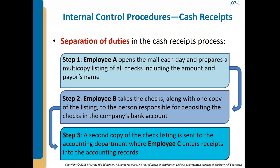An approach to internal control over cash receipts utilizing separation of duties might include: Employee A opens the mail and prepares a multi-copy listing of all checks including the amount and payer's name. Employee B takes the checks and one copy of the listing to the person responsible for depositing them. A second copy is sent to the accounting department where Employee C enters receipts into the accounting records. This ensures accuracy and prevents one person from stealing checks and altering records to cover up theft.